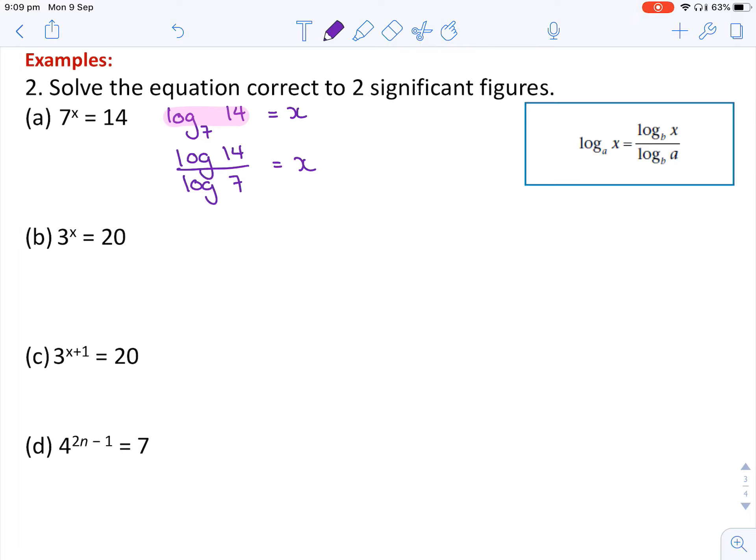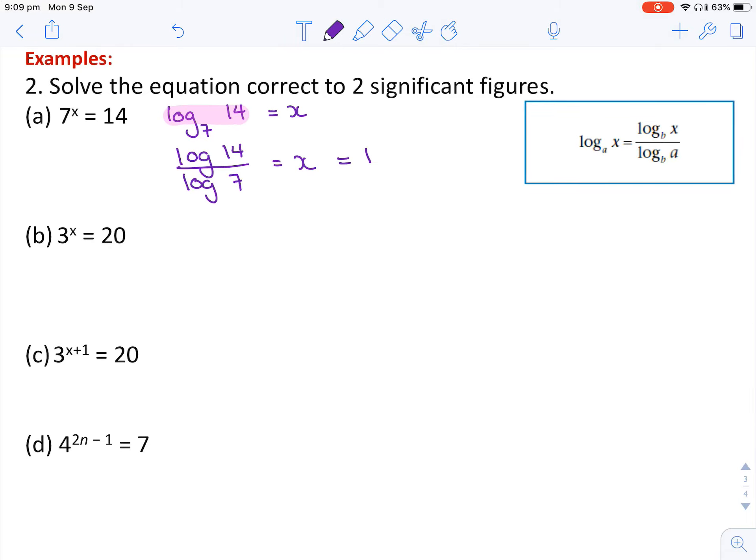Typing all the stuff that's on the left hand side into the calculator should give you an x value of 1.3562 and a few numbers to follow. This question had asked for two significant figures, so remember that's the first two non-zero numbers. So we're really dealing with just these two numbers here. This number tells me whether I need to round up. I ignore anything else. So this becomes 1.4 to two significant figures.